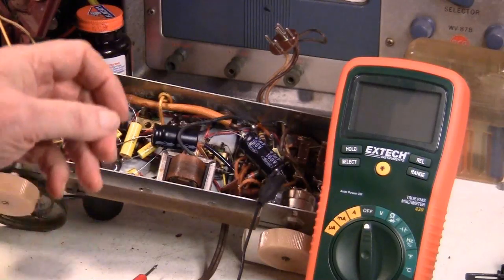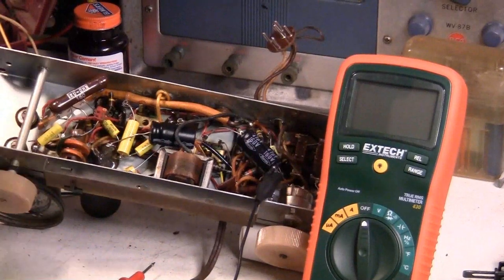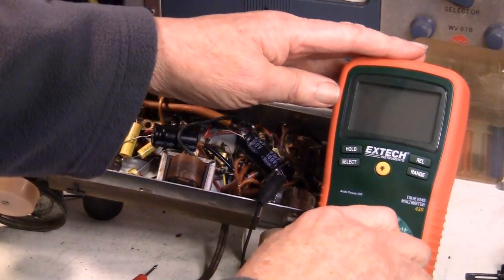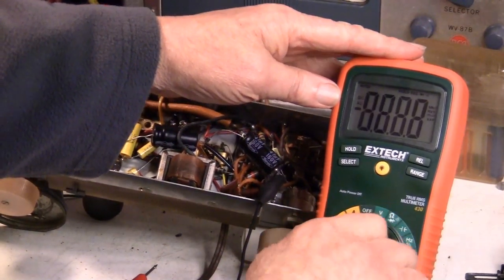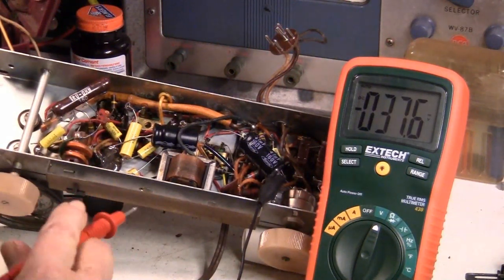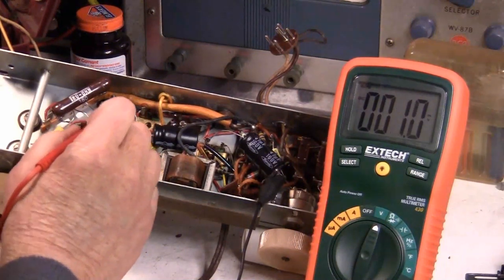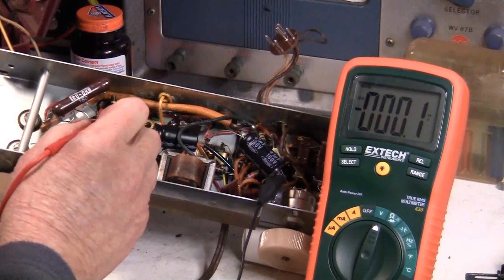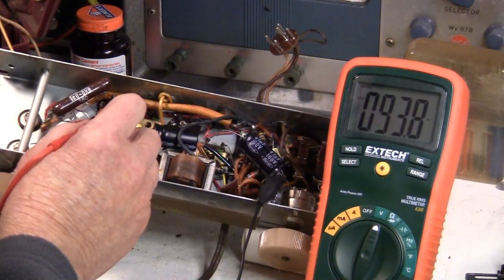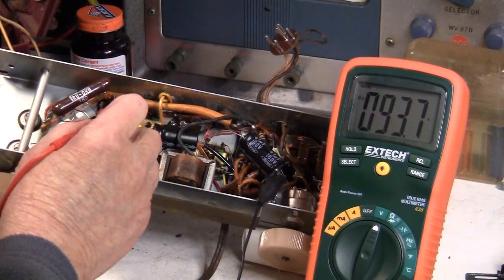After I looked at the wiring diagram, which I have right here, and also looked to see what voltages I needed to find on various pins, I started measuring the voltages. And this is pin 2 of V1. And we're supposed to have 90 volts. We've got 93.